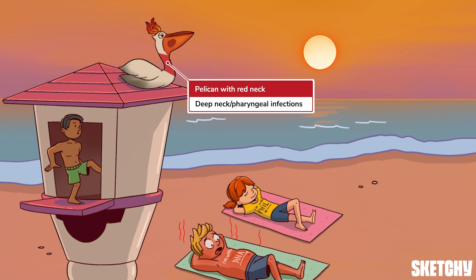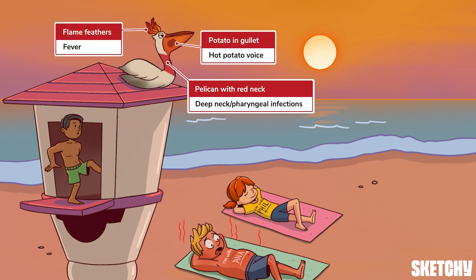If a deep neck or pharyngeal infection is severe enough, it can cause acute dyspnea. At Breathtaking Beach, the symbol for pharyngeal infection is a pelican with a red neck. You may see fever — represented by his head feathers resembling flames — sore throat, and a muffled hot potato voice, represented by a potato in his gullet. Remember, the swelling may not be as clinically visible as it is in this pelican with his gorgeous giant gullet.